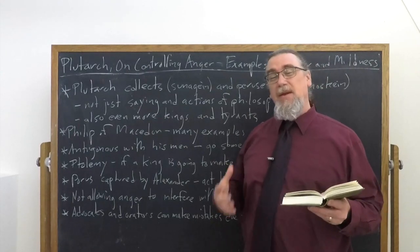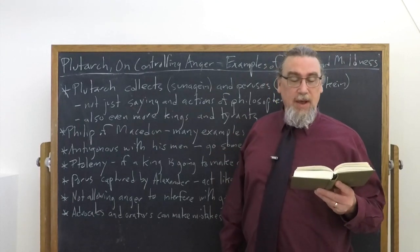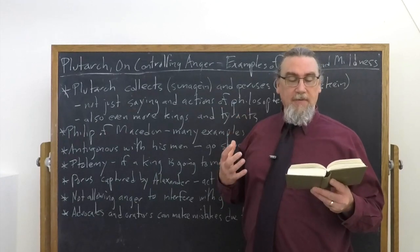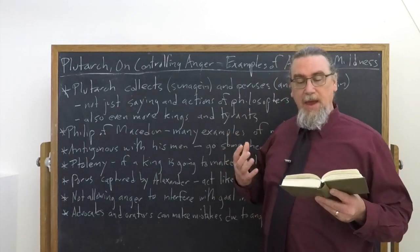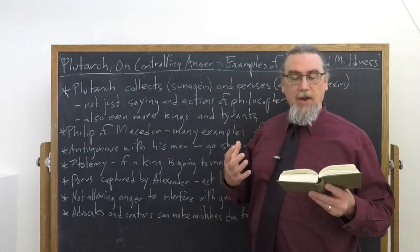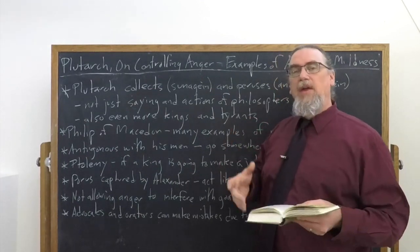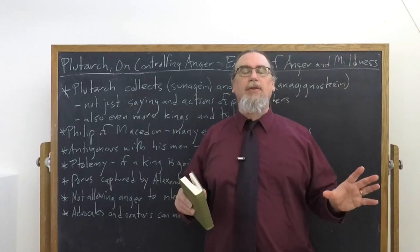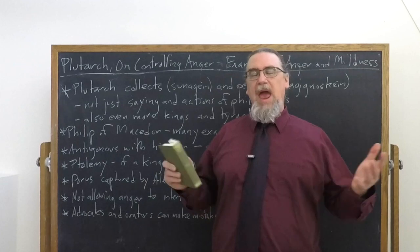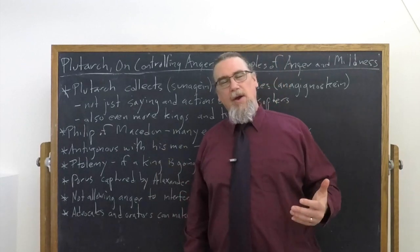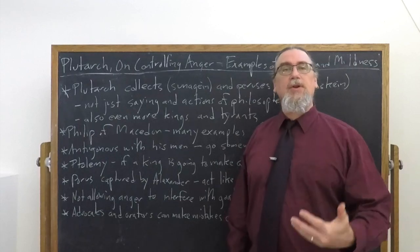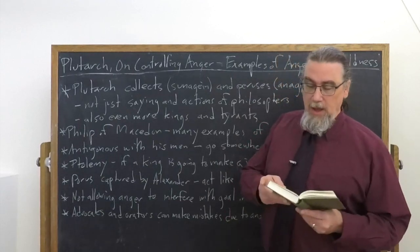He doesn't actually begin with Philip of Macedon, but I think that we should, because he talks about Philip so often. And so he begins by talking about this guy, Arcadian the Achaean, who was always railing against Philip. Philip was trying to unite all of Greece underneath the Macedonian monarchy and then to create an army that then he would take to fight Persia, which is what his son Alexander will do.